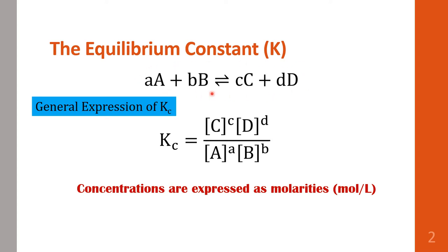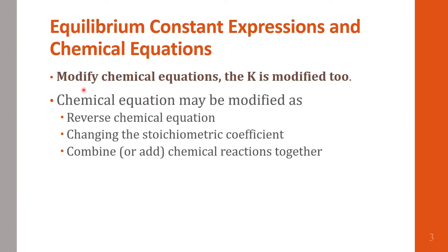Let's think about what happens when we change the pattern of the chemical equation. If we take CD as the reactant and AB as the product instead, the expression for Kc would change as well. So if you modify the chemical equation, K is modified too. The chemical equation may be modified as a reverse reaction, you may change the stoichiometric coefficients, or we can combine or add chemical reactions together to get a new one, and K must look different as well.